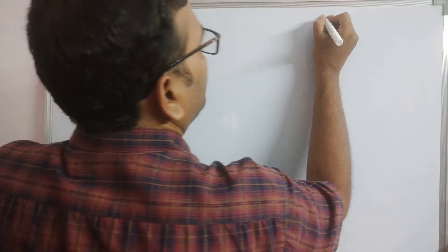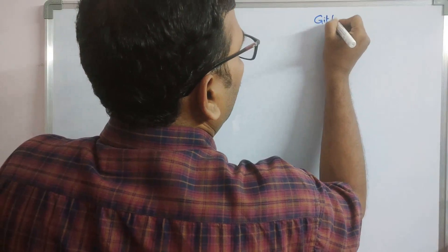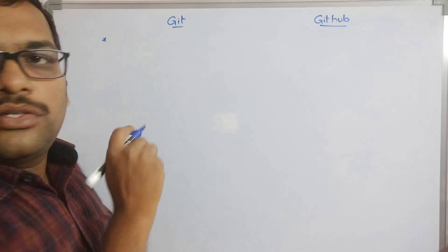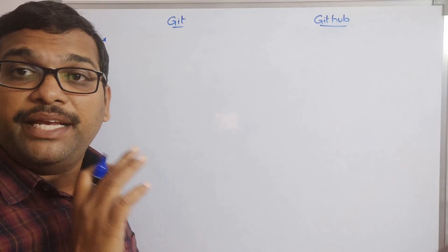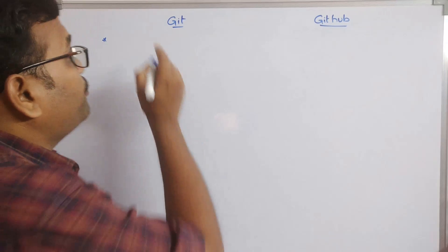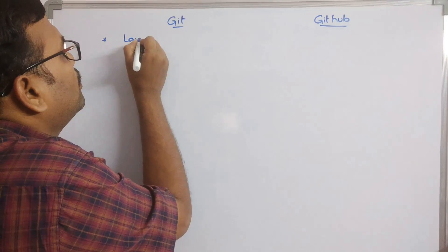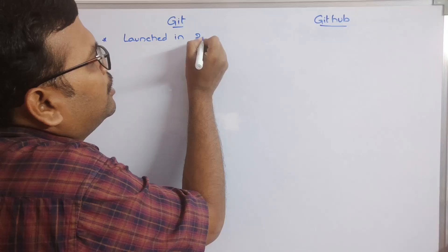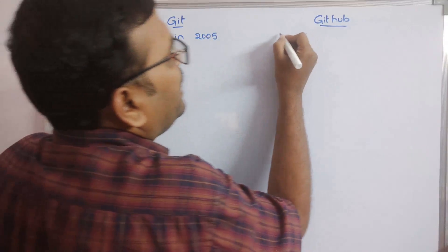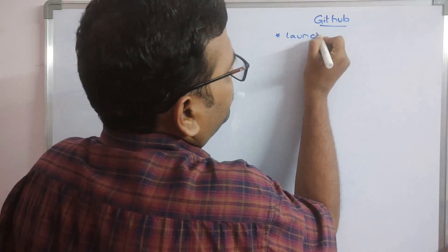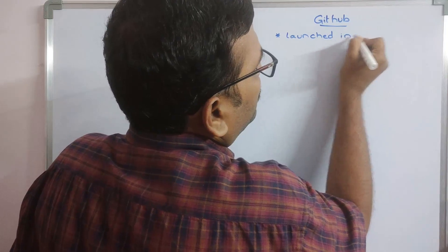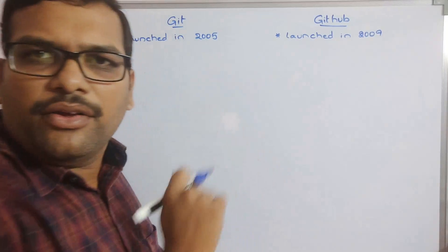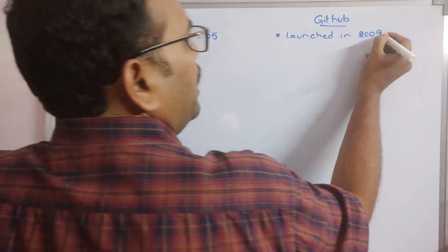So Git has been launched in 2005, and GitHub was launched in 2008 or 2009.